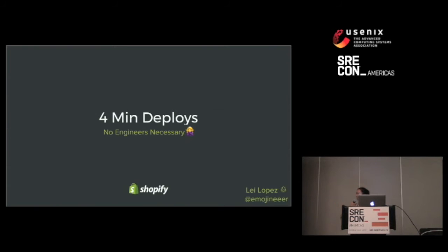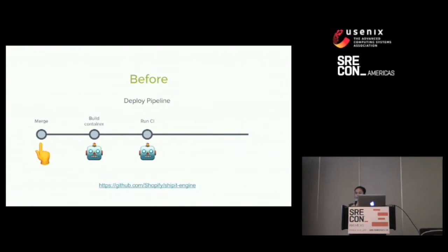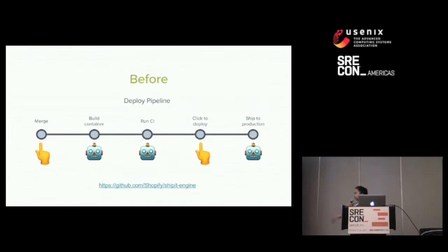And if you couldn't guess by the title, it's about our deploy tool. Our deploy tool is called ShipIt, and it's open source, so you can find it at this link here. When I joined Shopify over a year ago, this is kind of what our pipeline looked like. A developer would merge their code into master, which would kick off a container build and a CI run, both orchestrated by ShipIt. ShipIt would complete those two tasks, a deploy button would appear in the ShipIt UI, and the developer would click to deploy their code. This process would take about four to five minutes, and we were able to deploy around 30 to 40 times per day on average.